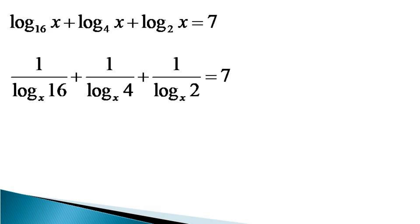And in this equivalent equation, the arguments of logs can be expressed as the powers of 2 as 1 by log of 2 raised to the power 4 to the base x plus 1 by log of 2 square to the base x. And the third term remains as such as 1 by log 2 to the base x is equal to 7.